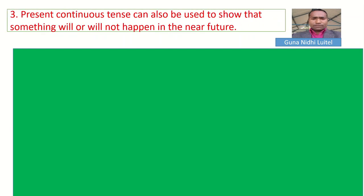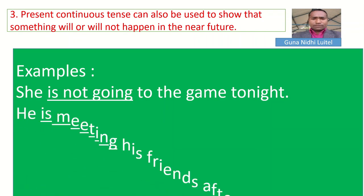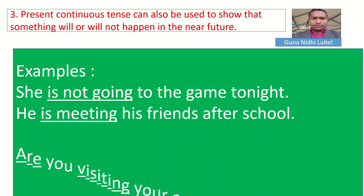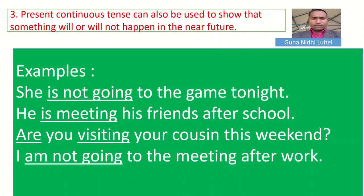Okay, now let us learn about the third rule. Present continuous tense can also be used to show that something will or will not happen in the near future. You have to note — near future. The action will happen. 'She is not going to the game tonight.' See — near future. Another example: 'He is meeting his friends after school.' 'Are you visiting your cousins this weekend?' This also talks about near future. 'I am not going to the meeting after work.' These are near future actions, so they will be in present continuous tense.